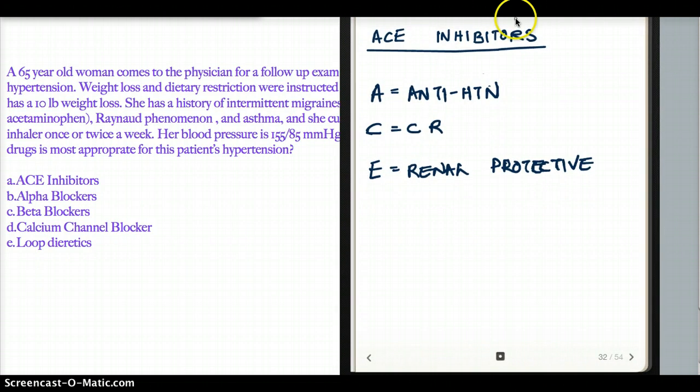So ACE inhibitors, what do they do? They decrease afterload because it's a diuretic. Because it decreases afterload, it's cardioprotective. It is going to inhibit cardiac remodeling. That's why it's good for the heart. At the same time, ACE inhibitor is a diuretic, which is also renal protective.